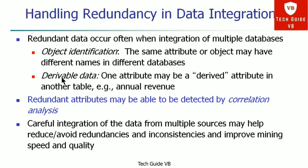Redundant attributes may be detected by correlation analysis. Careful integration of data from multiple sources may help reduce or avoid redundancies and inconsistencies, and improve mining speed and quality. So careful integration is essential for avoiding such redundancies.